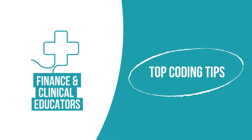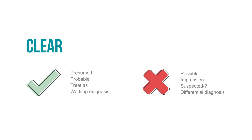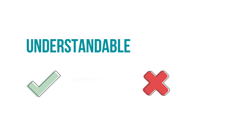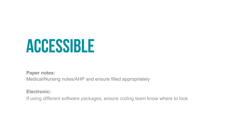Clear: write clearly and legibly, type if possible, use appropriate language, and check with your organisation as some have agreements to accept certain terms. Complete: ensure all diagnoses and procedures are recorded in detail, and document all relevant comorbidities. Understandable: abbreviations and shorthand cannot be coded, and coders are not allowed to interpret investigations or numbers. Accessible: make sure the coding team know where key information is recorded.